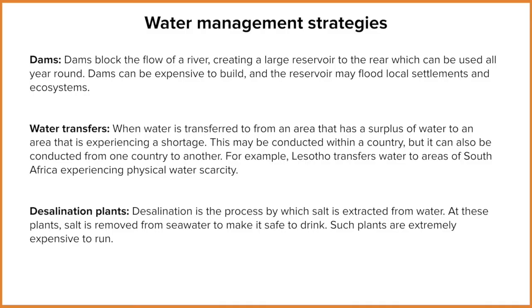The advantage of water transfer is that places with a lot of water can earn money from transferring it, and it helps to level out water supply across regions. But the downside is that you have to rely on another region, which isn't always ideal — they might end up in water deficit themselves, so you'd both be in trouble. It can also be expensive to set up the network, as these large underground pipes are very expensive infrastructure projects.